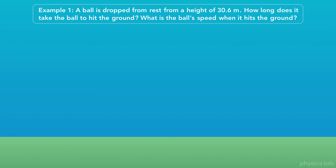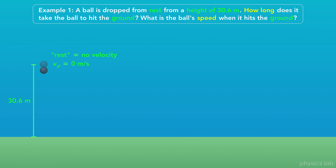First, let's pick out the important information. The ball is dropped from a height of 30.6 meters. The ball is dropped from rest, which means the initial velocity is 0. We want to find the time and the final speed, or the magnitude of the final velocity, when the ball hits the ground.